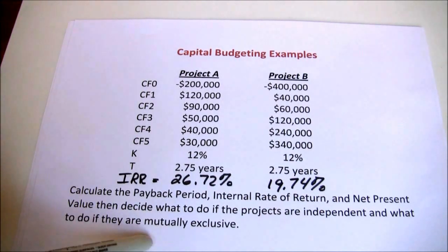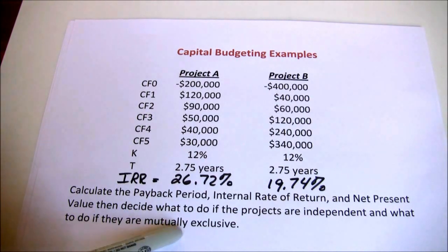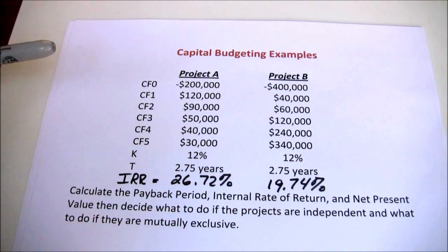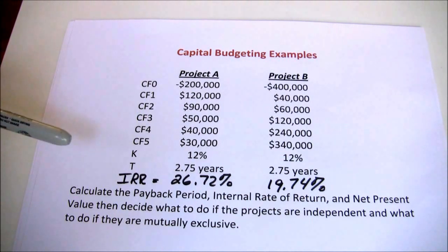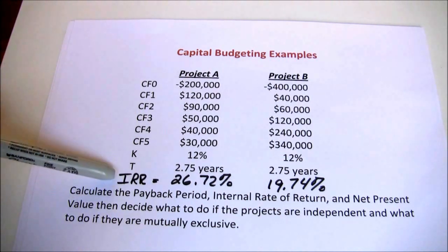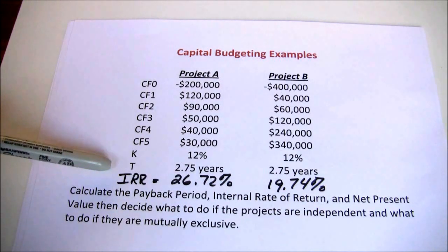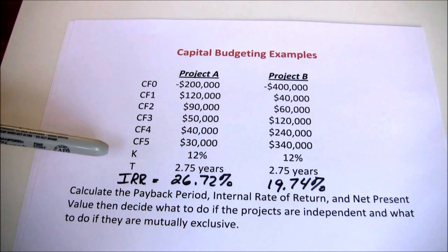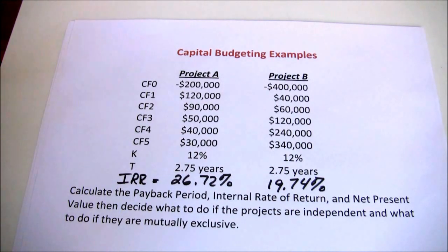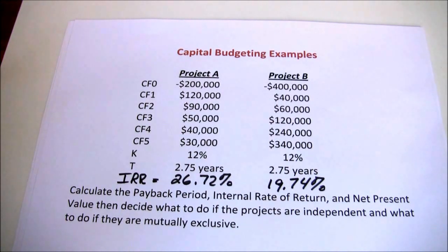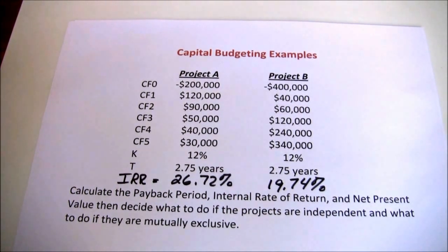They both have an internal rate of return greater than their required return, or sometimes called their hurdle rate. How about if they're mutually exclusive? If they're mutually exclusive, now we have to choose the best project. The best project is the one with the highest internal rate of return — that's project A. According to internal rate of return, project A is the better project. That should help you with internal rate of return calculations using the Texas Instruments BA2 Plus calculator. I'll see you later.